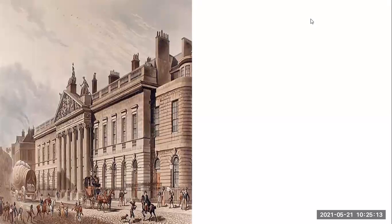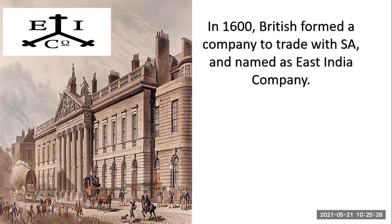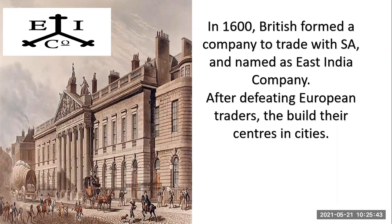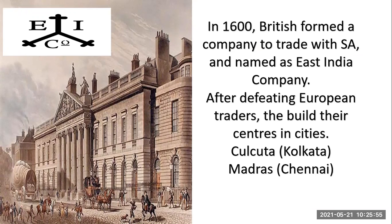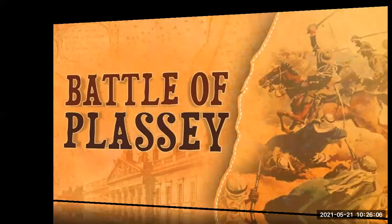Here we have seen the East India Company and this is its logo. According to our book, in 1600 the British formed a company to trade with India named the East India Company. After defeating European traders, they built their centers in different cities: Calcutta, now named Kolkata; Madras, now named Chennai; and Bombay, now named Mumbai.